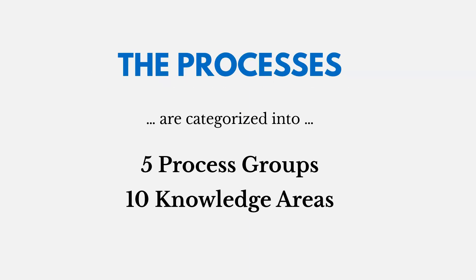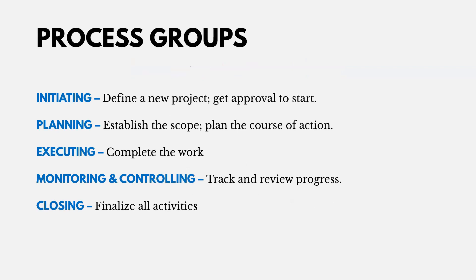The processes are categorized into five process groups and ten knowledge areas. The five process groups are: initiating, planning, executing, monitoring and controlling, and closing. When we initiate a project, we're defining a new one and getting approval to start. In planning, we establish scope and plan the course of action. In executing, we complete the work. In monitoring and controlling, we track and review progress. And in closing, we finalize all activities.